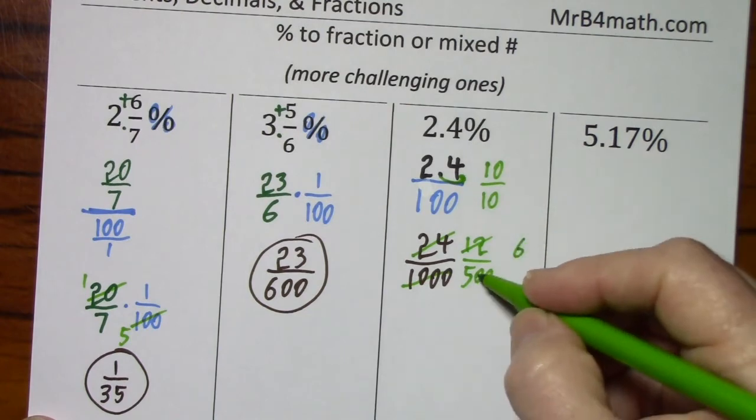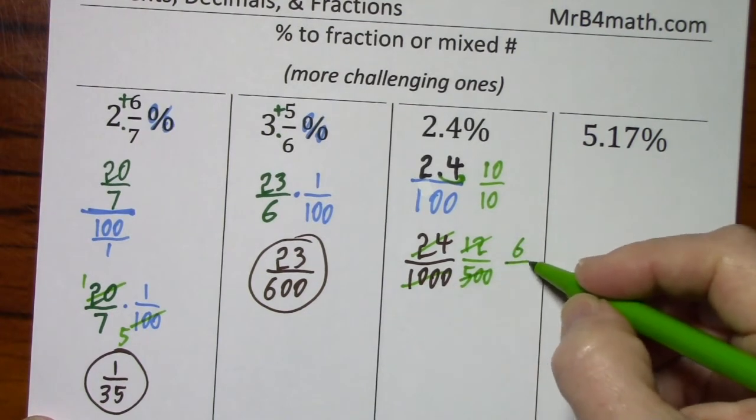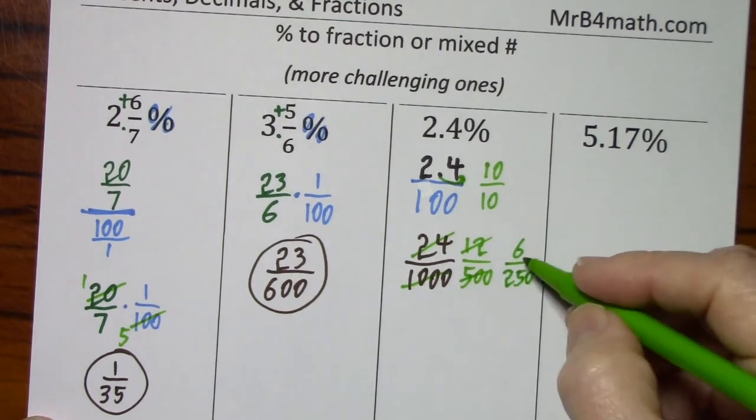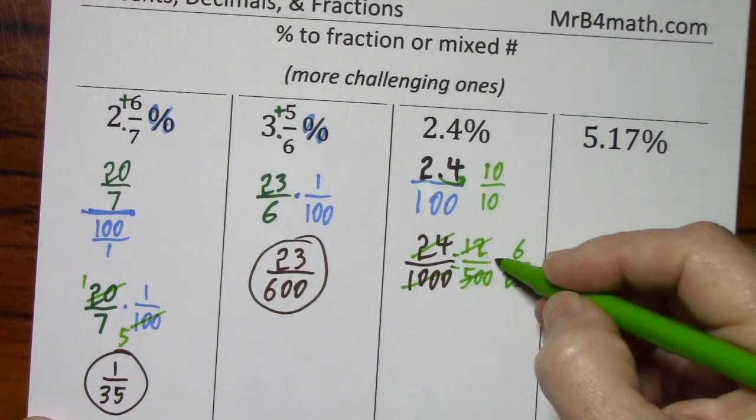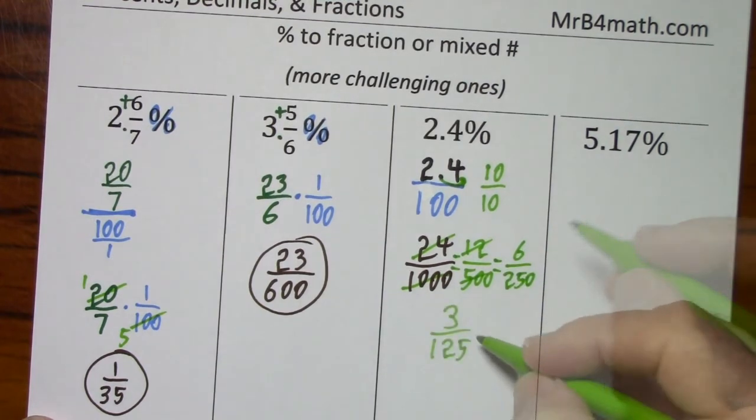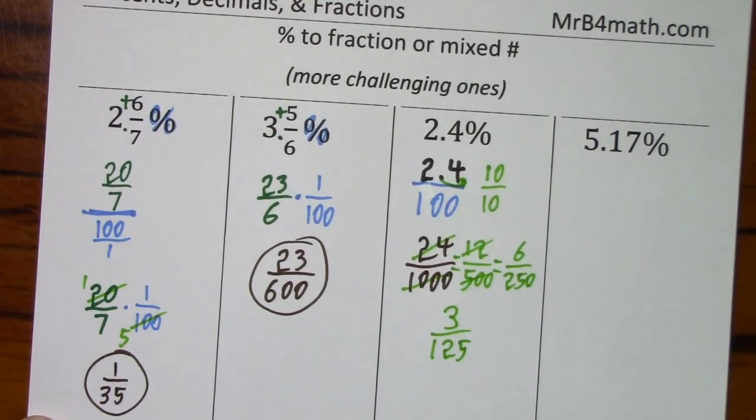Cut it in half or divide by 2 means the same thing. Gives you 6, cut it in half, 250. I can go again. 3 over 125. And fortunately, I can't reduce any more than that.